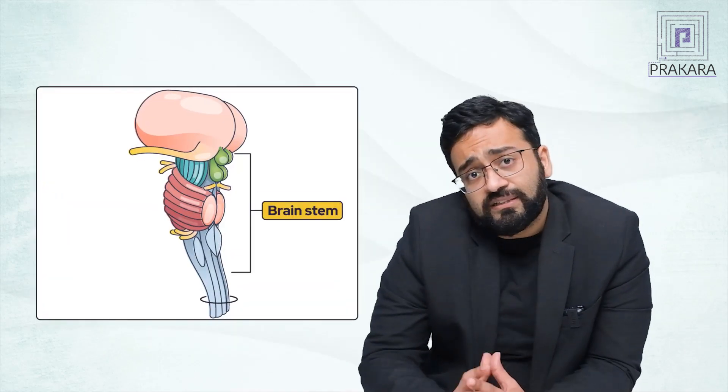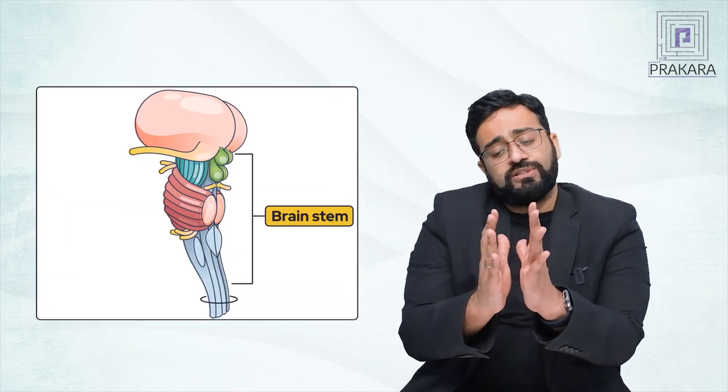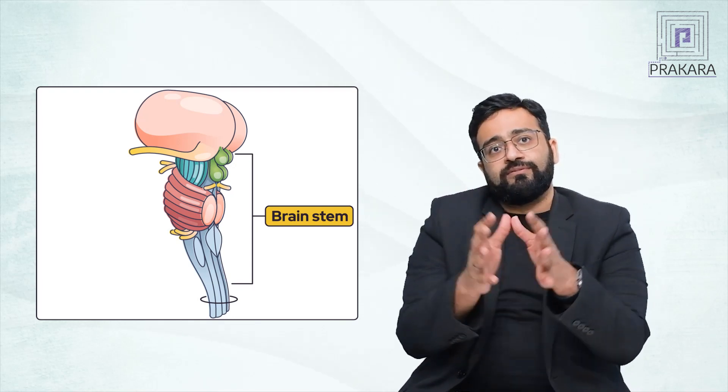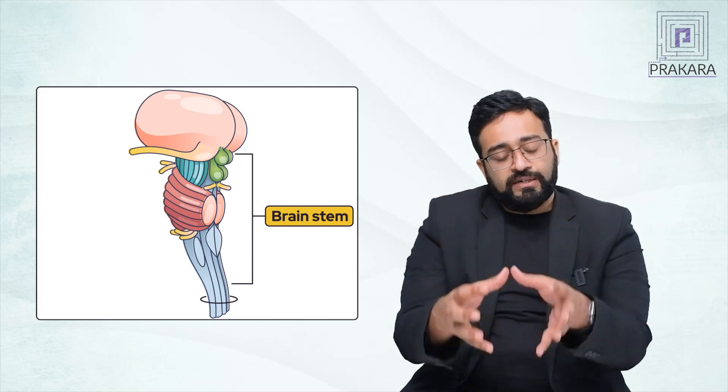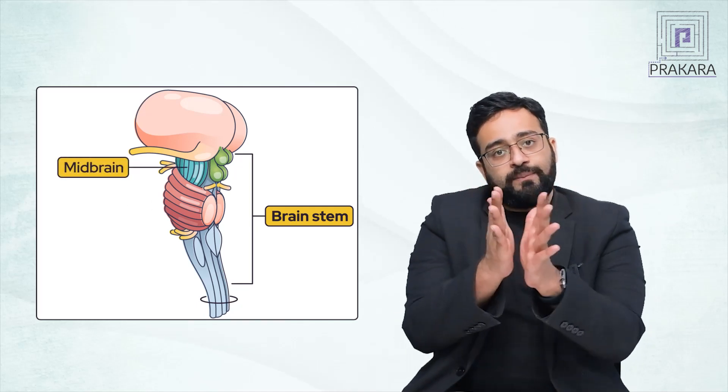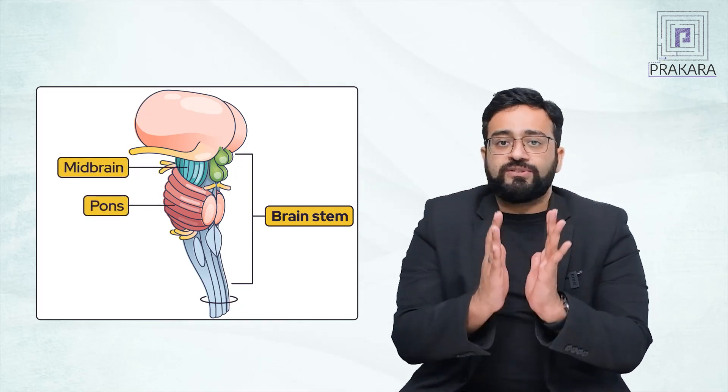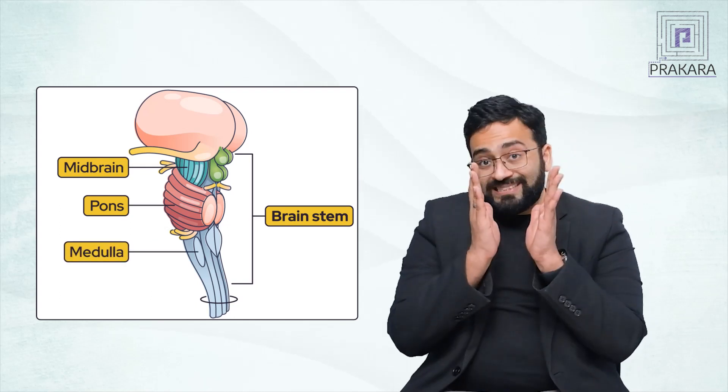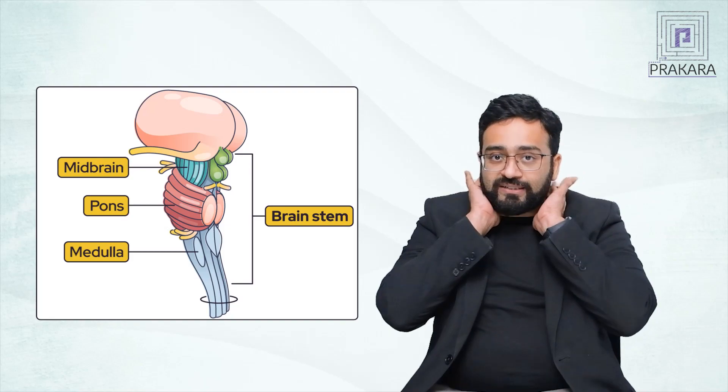The brainstem is the part of the brain which is just above the spinal cord. You have the cerebral hemispheres, then you have the midbrain. This midbrain, pons, and medulla together form the brainstem and they are located posteriorly.